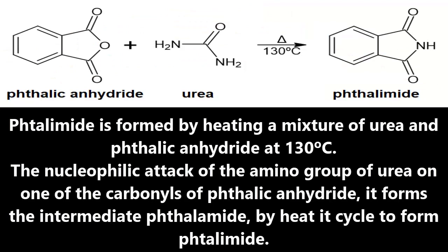Phthalamide is formed by heating a mixture of urea and phthalic anhydride at 130 degrees Celsius.